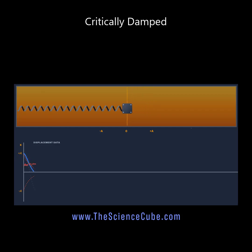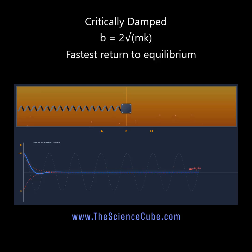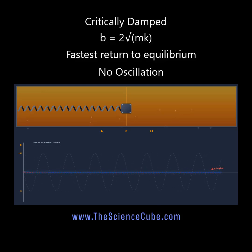Switch to honey. If we tune the viscosity so B equals exactly 2 times the square root of mk, the system returns to equilibrium in the fastest possible time without ever overshooting. Engineering perfection. This is critical damping.